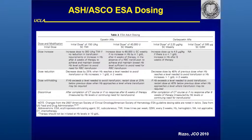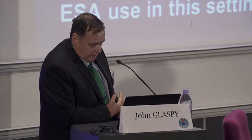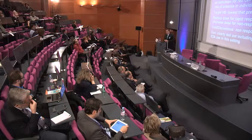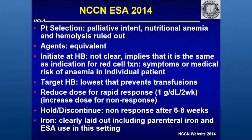Switching over to the NCCN — the NCCN is a much more clinically useful set of guidelines, and they have tried in writing these to be as helpful to clinicians as possible without stepping into the political puddles that litter the ESA landscape in the United States. They also talk about it being palliative intent, meaning patients where cure is a possibility cannot be treated. Nutritional anemias and hemolysis are ruled out. They consider the agents equivalent.